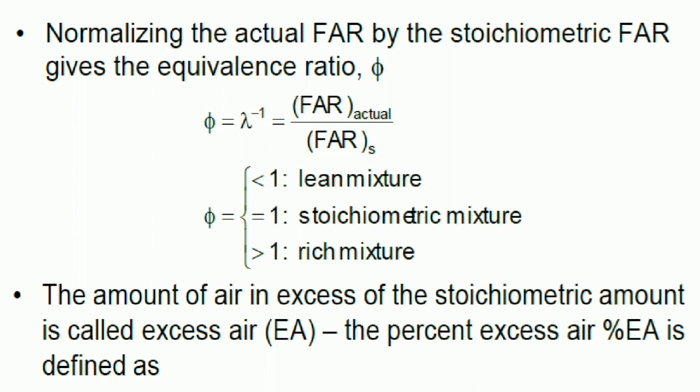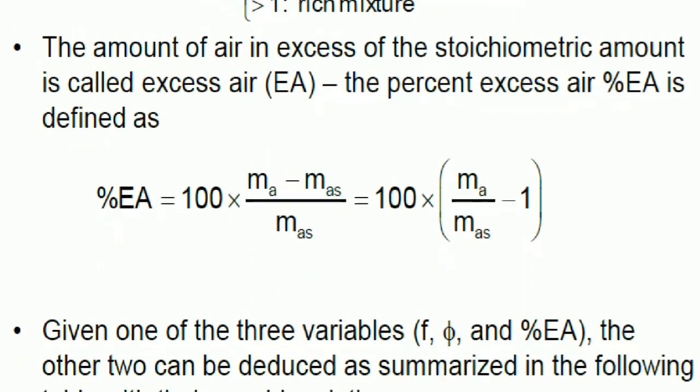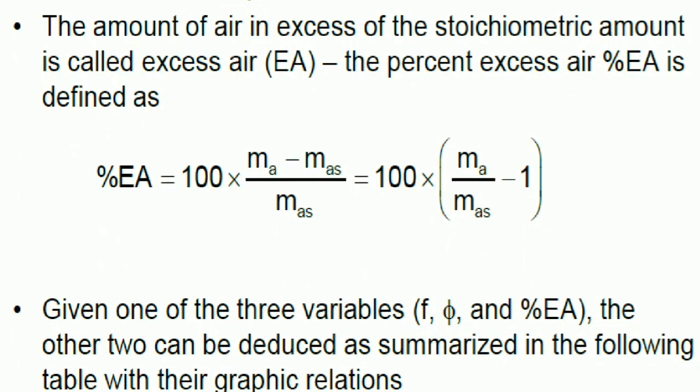The amount of air in excess of the stoichiometric amount is called excess air (EA). The percent excess air %EA is defined as: %EA = 100 × (ma - mas)/mas = 100 × (ma/mas - 1).